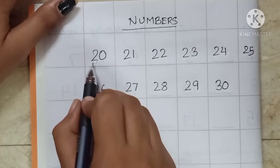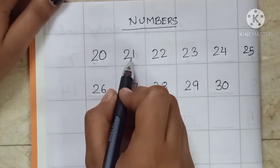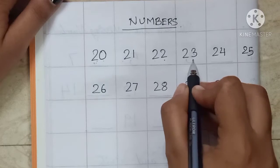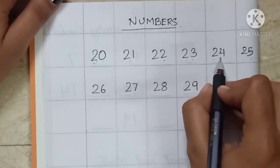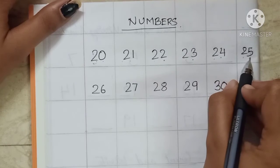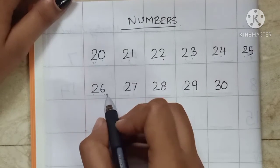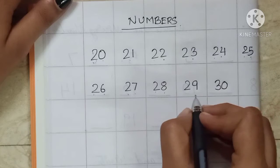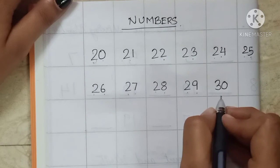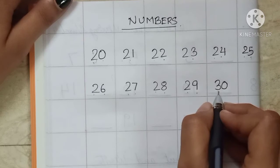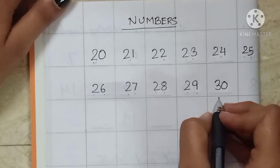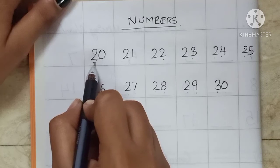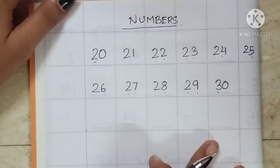20, 21, 22, 23, 24, 25, 26, 27, 28, 29, 30. Okay.